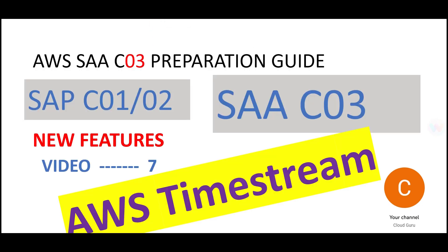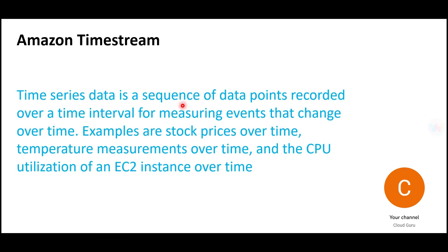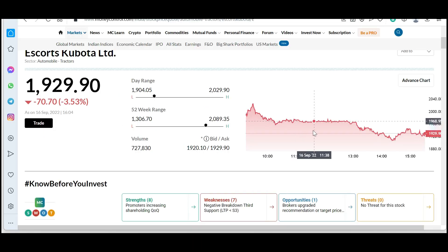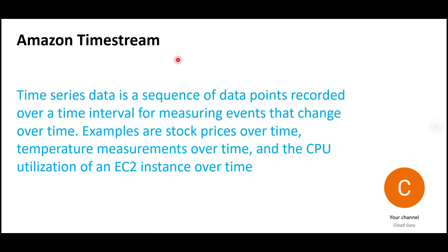When we talk about Timestream, we are talking about what sort of data. Time series data means a sequence of data points recorded over a time interval. For example, stock prices — if you are a trader or invest in stocks, you would see that the stock prices keep changing over a period of time. Such data has two special characteristics: first, the volume is very high because at every point you are capturing it; second, you have to keep all states of the data.